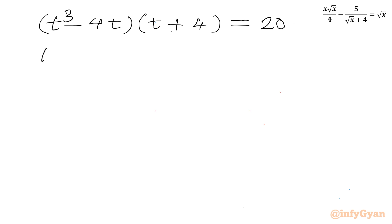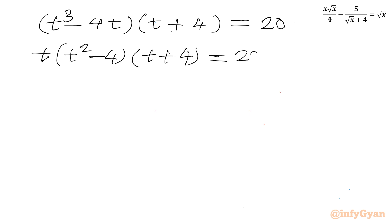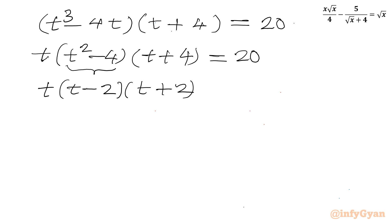Now I will take t common from the first bracket, giving t(t² − 4) times (t + 4) = 20. Now I will apply the difference of two squares formula, so t(t − 2)(t + 2)(t + 4) = 20.